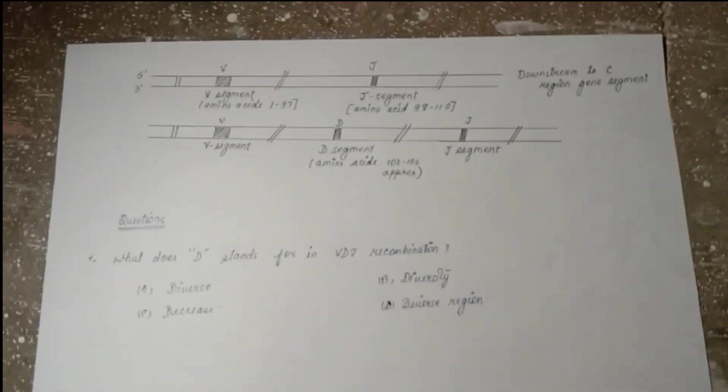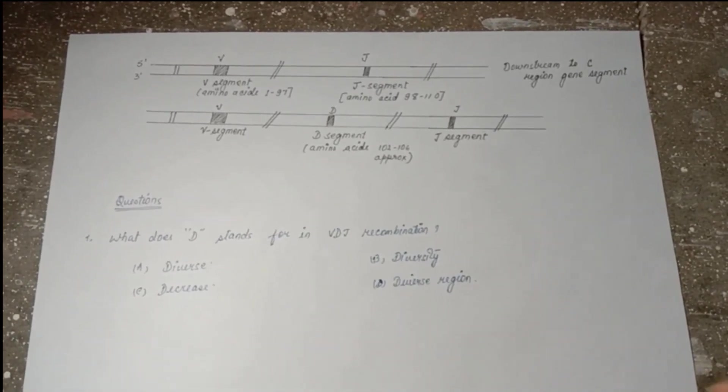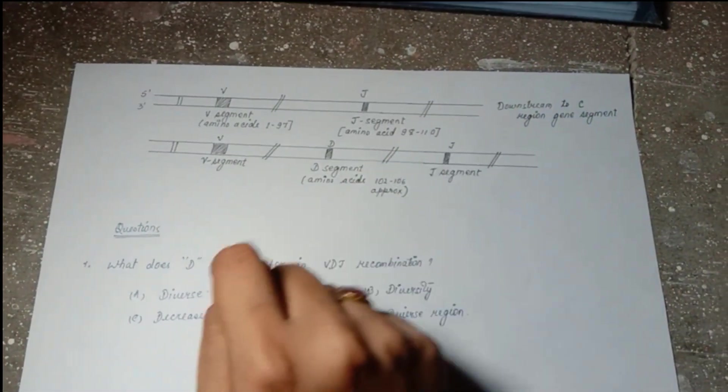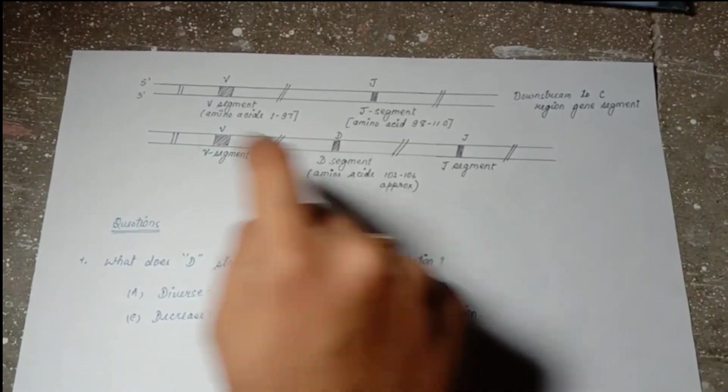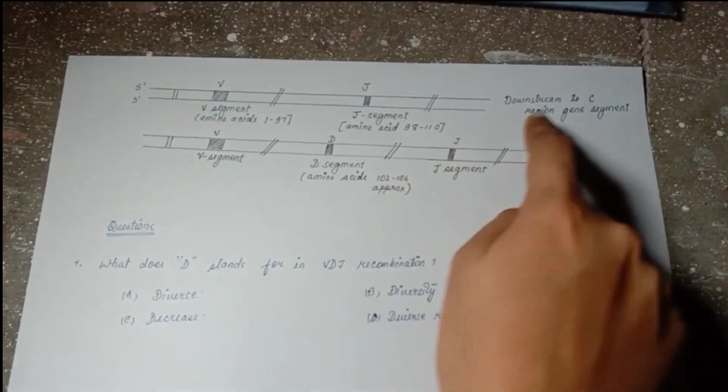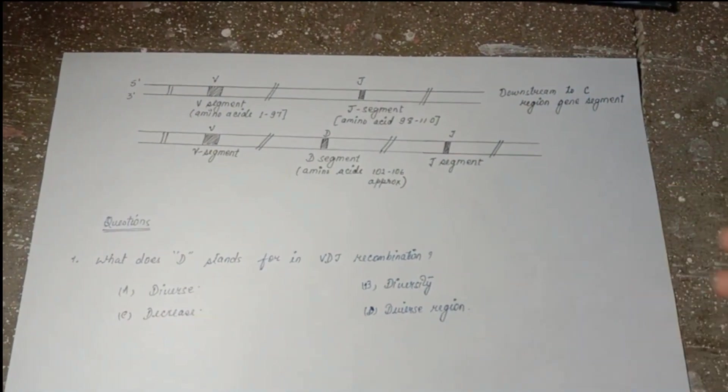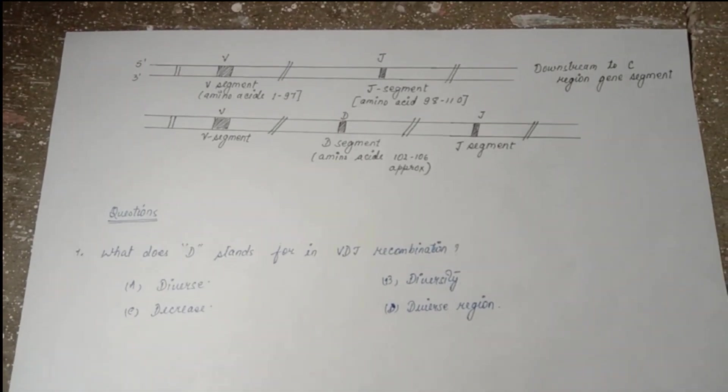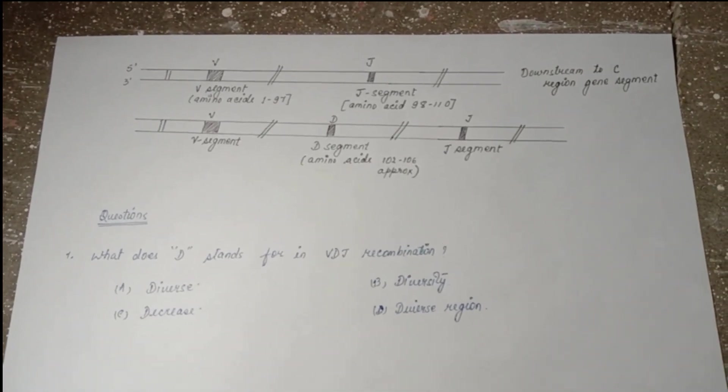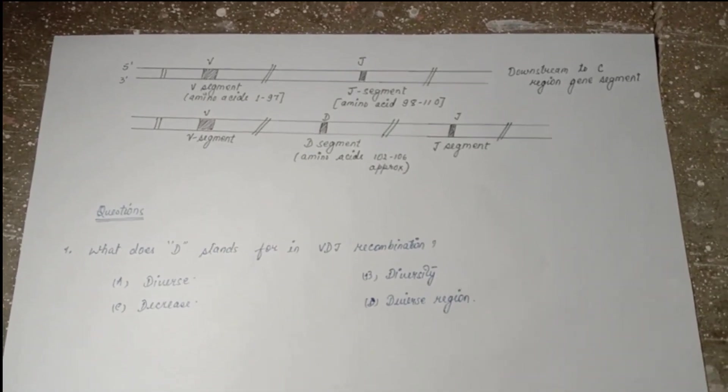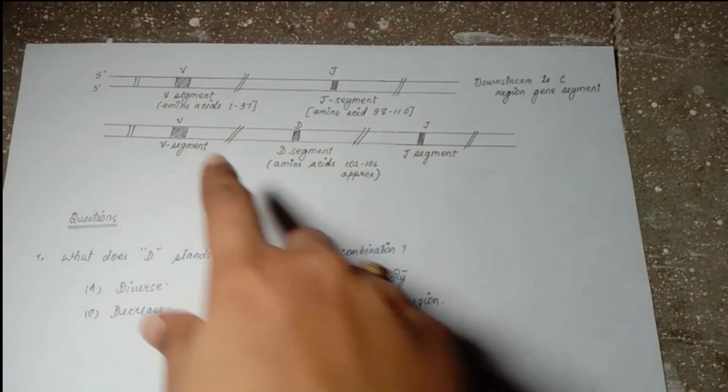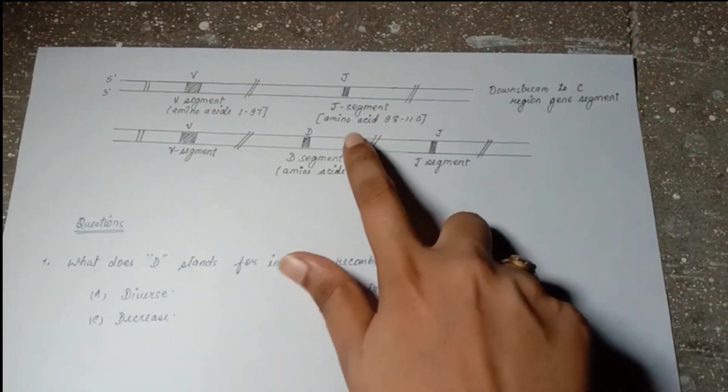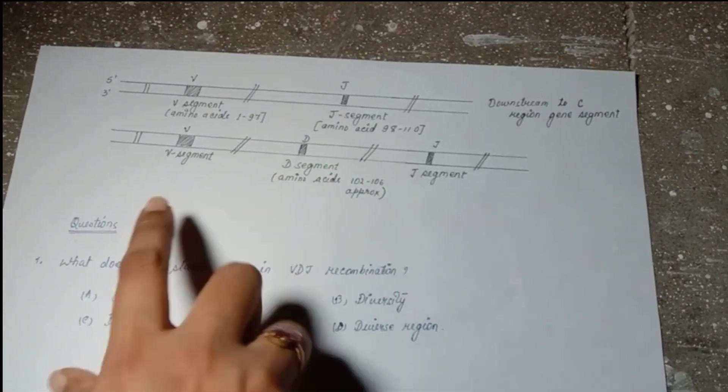This theory is later on accepted as VDJ recombination. Here is the segment of gene. We have 5 prime and 3 prime region for the transcription process. V segment is there, so amino acid number 1 to 97. Then J segment is there, amino acid 98 to 110. Then we have V segment, D segment, and J segment.